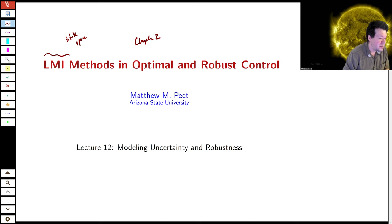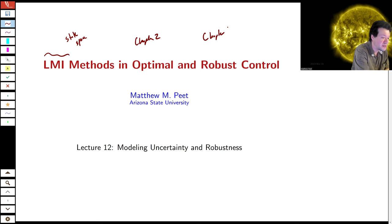And now in chapter three, we're going to deal with some of the problems that we created in chapters one and two, by turning to the problem of robust control.